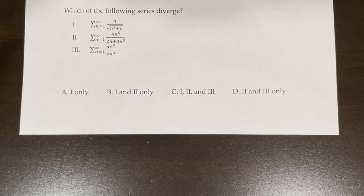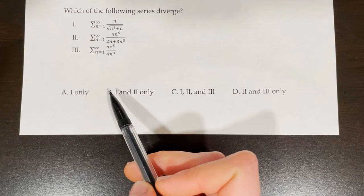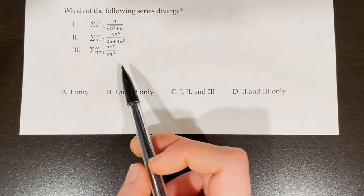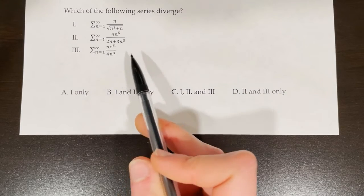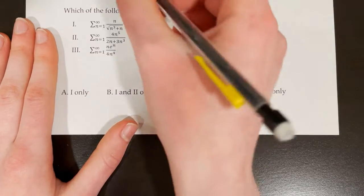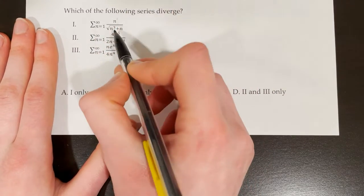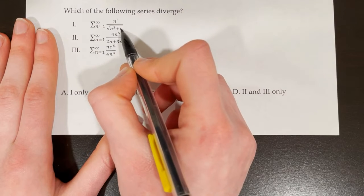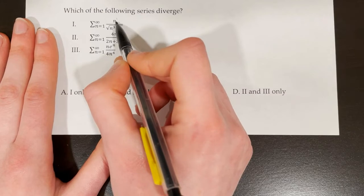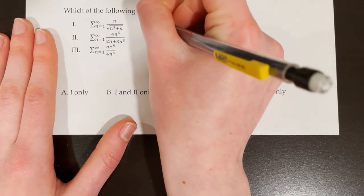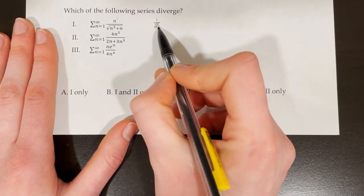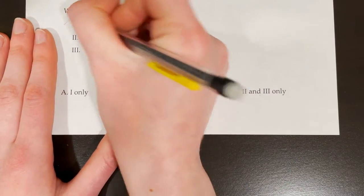Multiple choice: which of the following series diverge? For the shortcut method when crunched for time: the first series has roughly n^1 over √(n³), which is n^(1/2) to the power giving behavior like 1 over √n, i.e., 1 over n^(3/2). Wait — it's n^1 over n^(3/2), similar to 1 over √n. By the p-series test, 1 over n^(1/2) diverges since p = 1/2 ≤ 1. So tentatively this first series diverges.